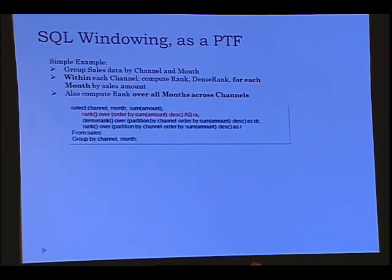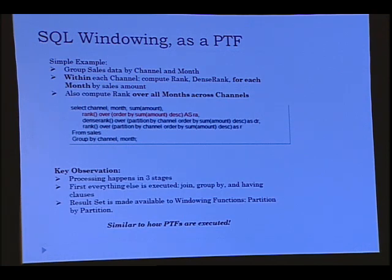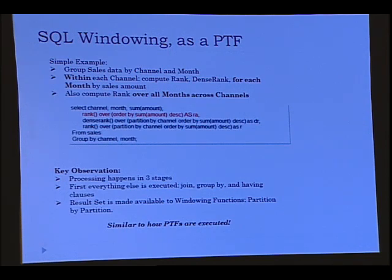Here's a simple example of SQL windowing: it's sales data, grouped by channel and month. You want to rank the data — for each channel, rank by month with both rank and dense rank — and also the rank over all months across all channels. So you have three windowing clauses associated with this SQL. The key observation is how this query gets processed: everything else — group by, having, joins — all happens first. Then on the result set, you apply these windowing functions partition by partition. Each windowing function specifies how the result set should be partitioned.